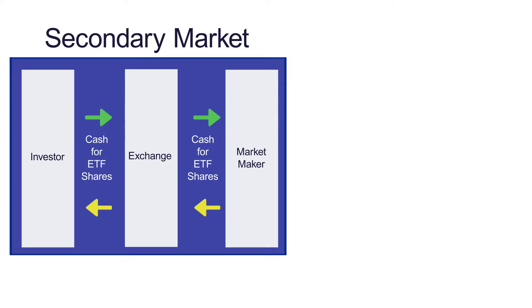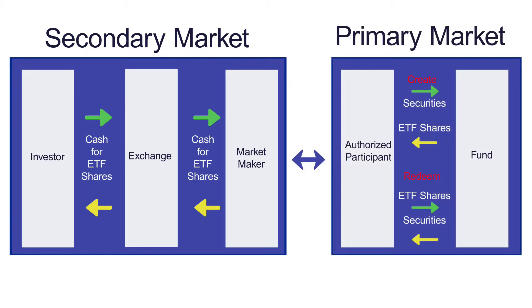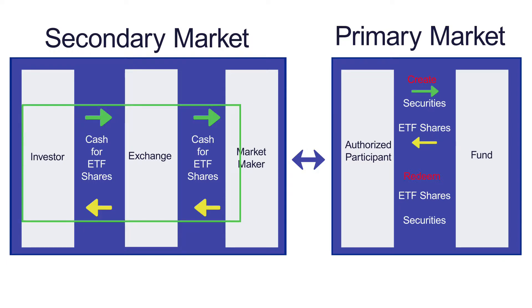Let's talk about how this mechanism actually works. Investors are trading on an exchange and may be transacting with another investor who is selling their shares — at that point the transaction is done, a buy and sell paired off. But most likely an investor will be transacting with a market maker providing liquidity, who prices the ETF based on fair value — where they can sell the ETF and buy the underlying basket. That is what's known as the arbitrage mechanism.